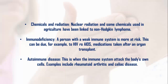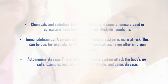5. Immunodeficiency: a person with a weak immune system is more at risk — this can be due, for example, to HIV or AIDS, or medications taken after an organ transplant. 6. Autoimmune disease: this is when the immune system attacks the body's own cells; examples include rheumatoid arthritis and celiac disease.